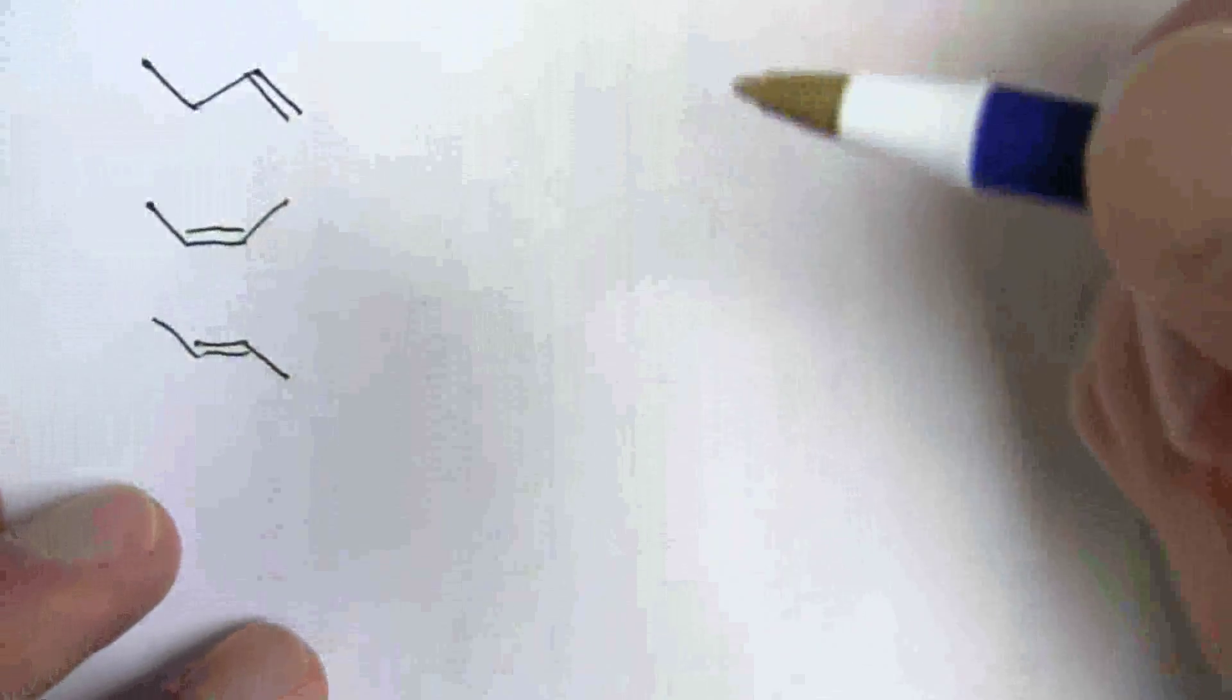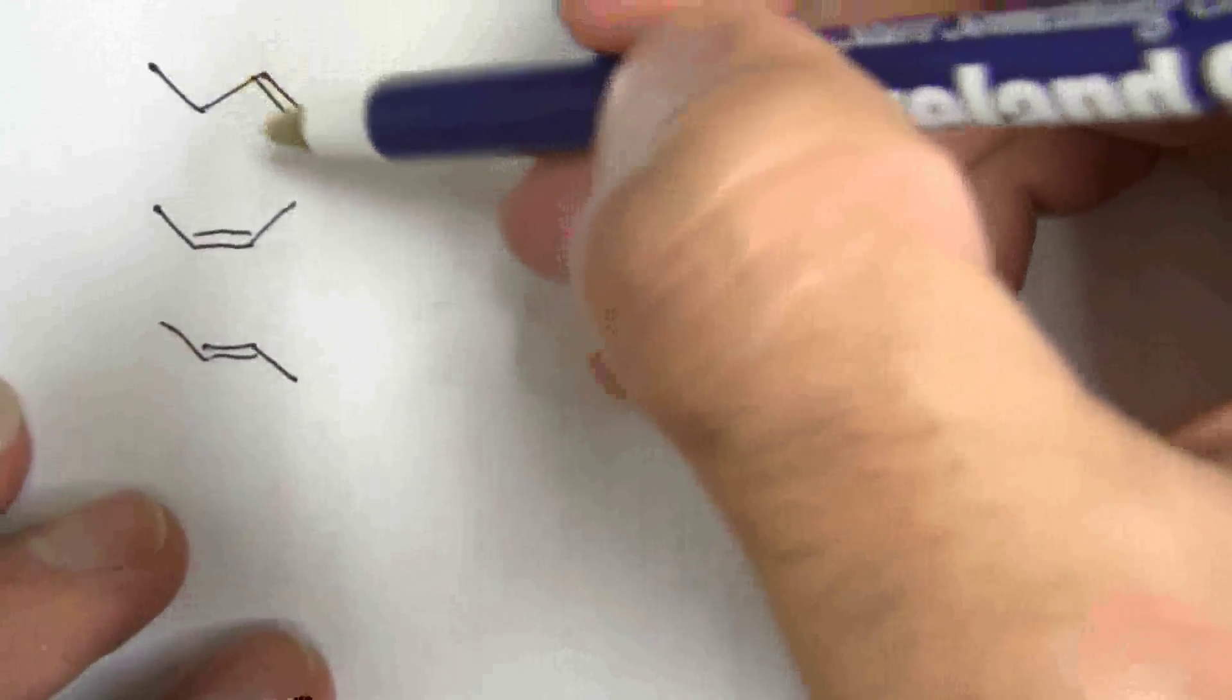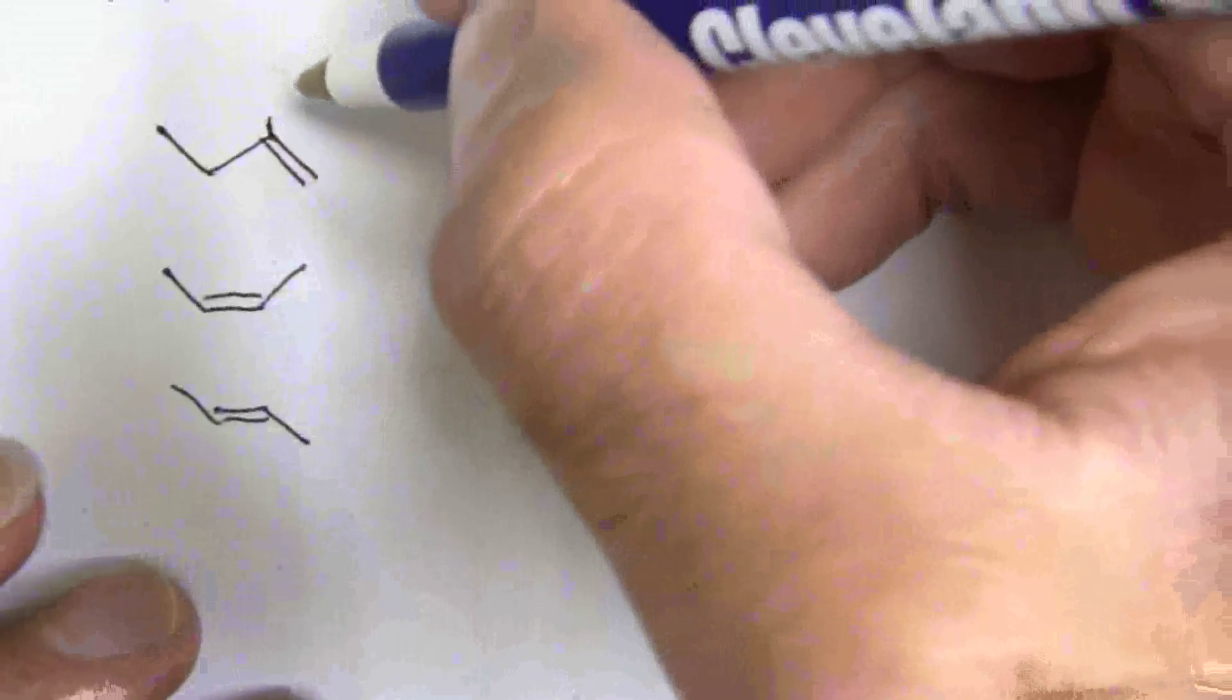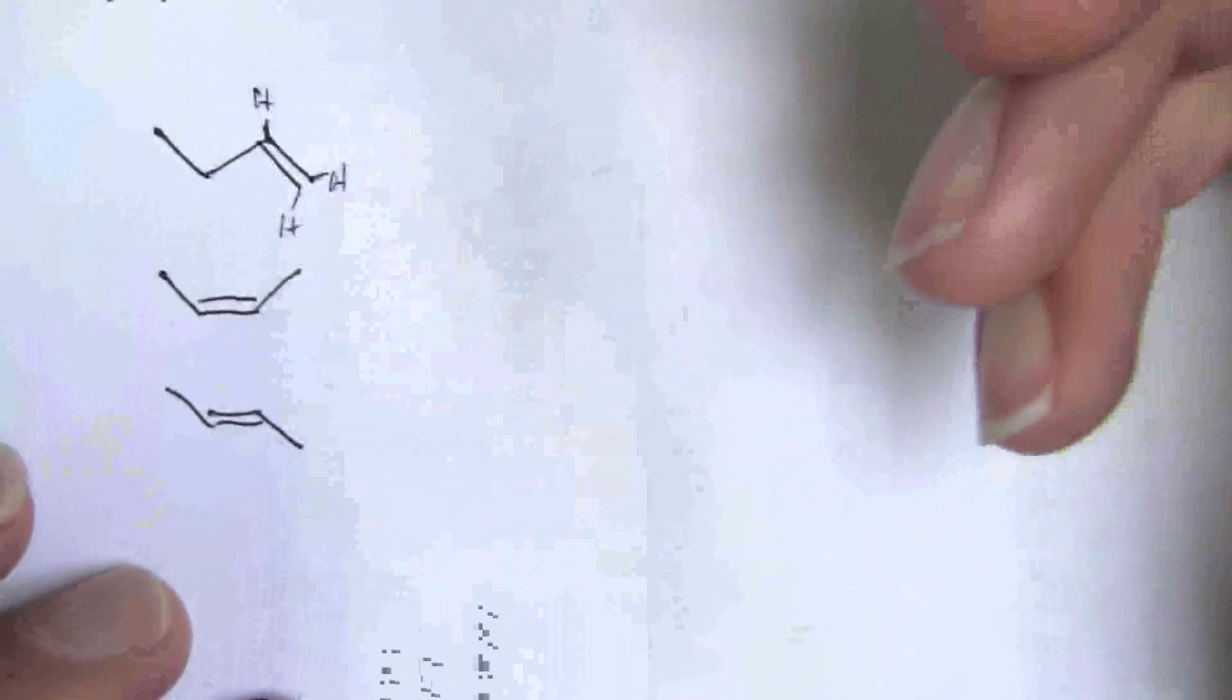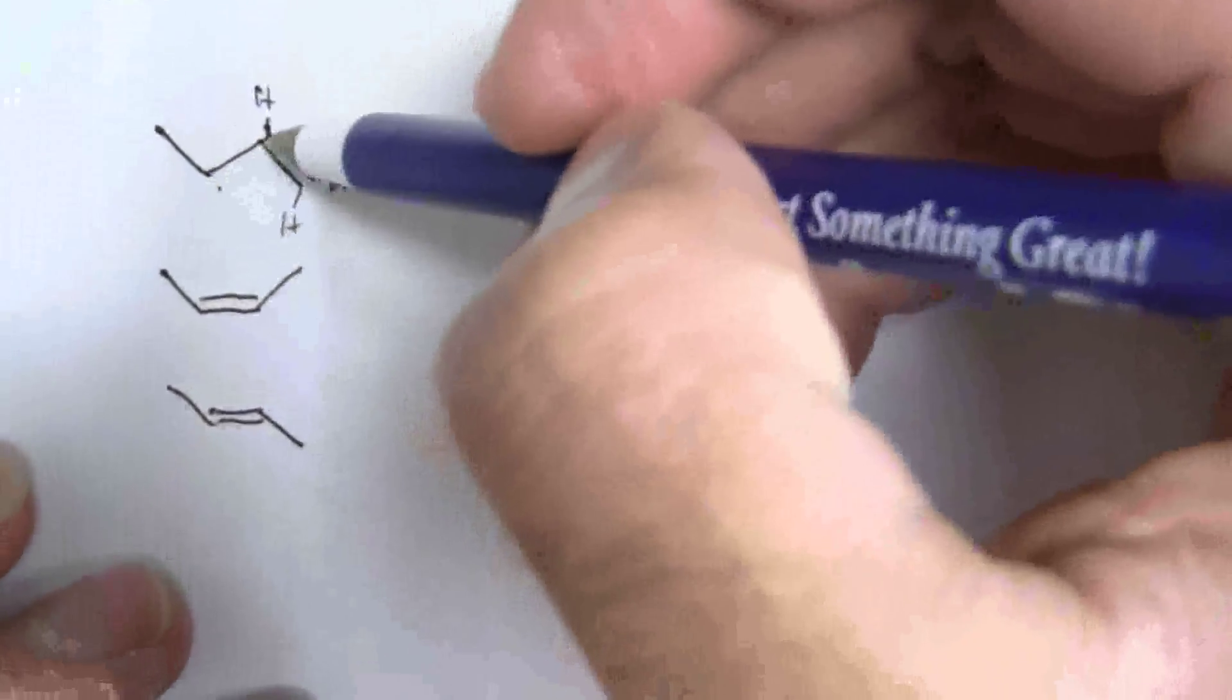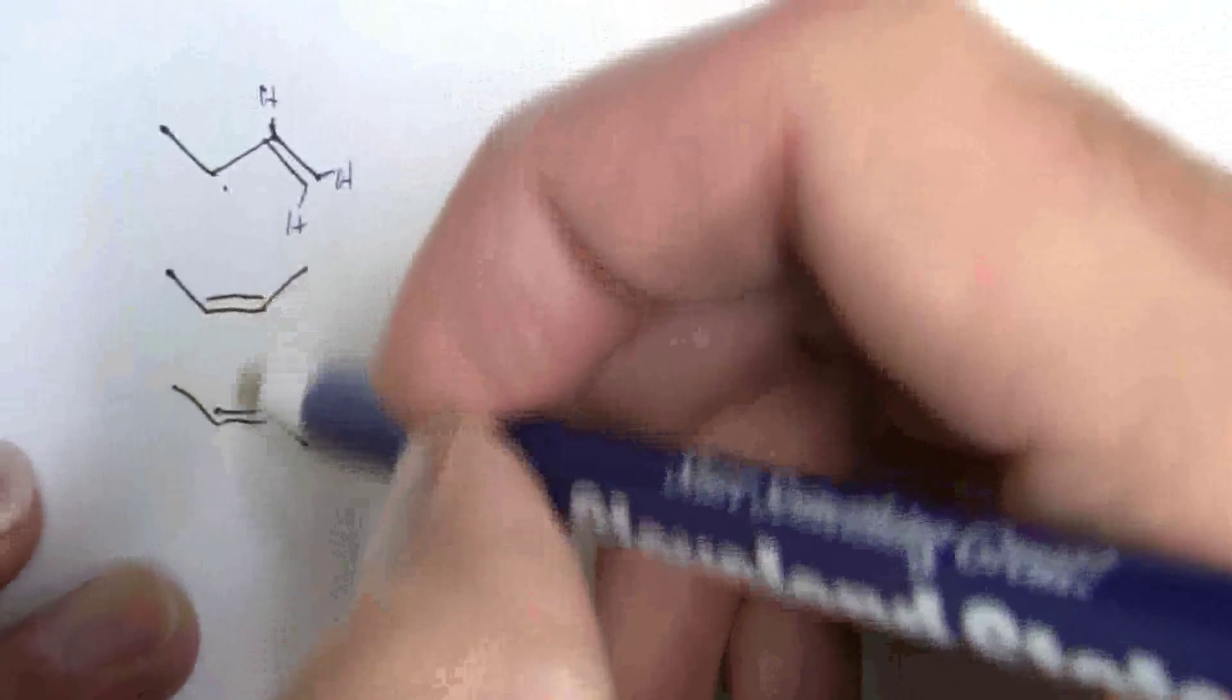So if we compare these three alkenes, what we find is that the alkene on the end, which has, if you look at this, we have one hydrogen atom there and two more hydrogen atoms attached on that end. So we have a total of three hydrogens and then one carbon attached to that double bond, whereas these other two, they have two carbons and then two hydrogens.